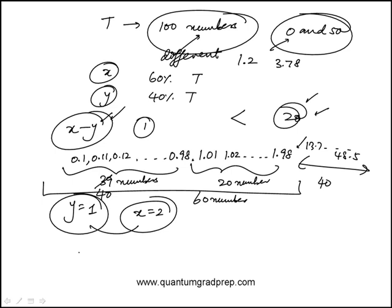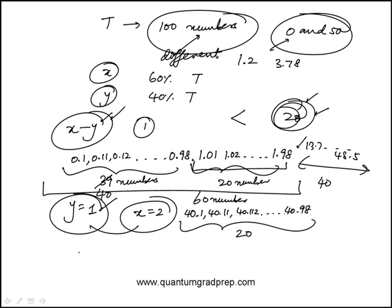Now the question is, can I make x minus y greater than 20? We'll keep y at 1, and what we can do here is to jump straight from 0.98. I could jump to 40.1, 40.11, 40.112, and I could go up to 40.98. So essentially these 20 numbers are in that range.